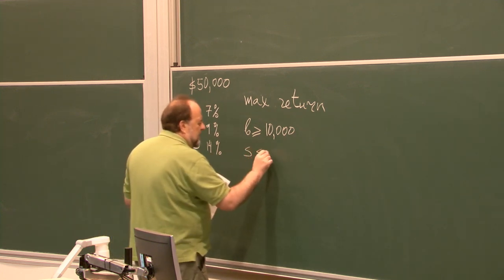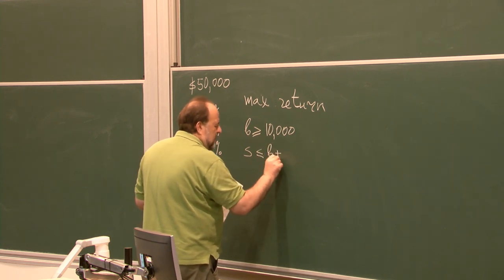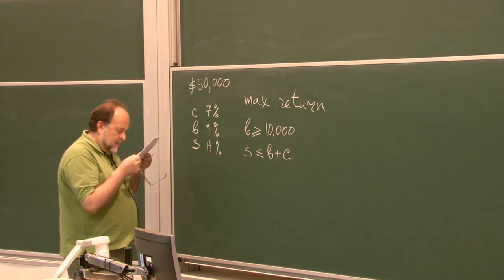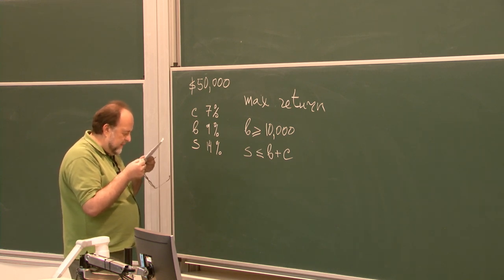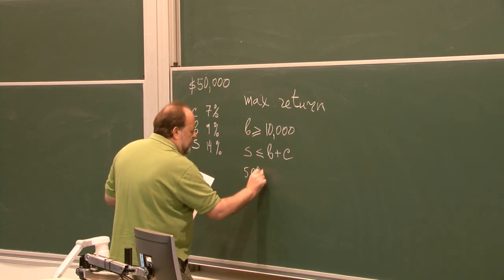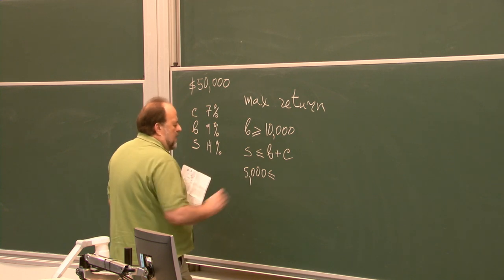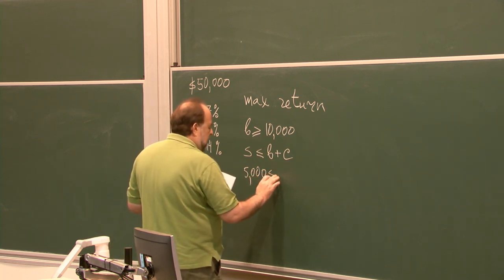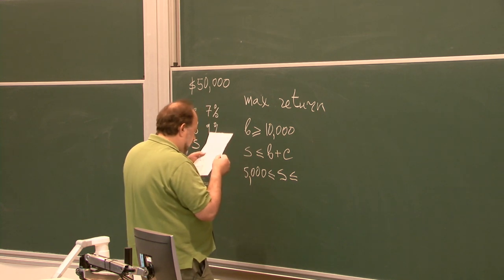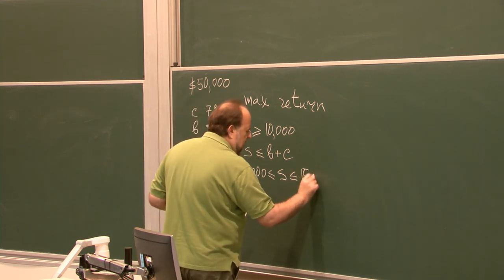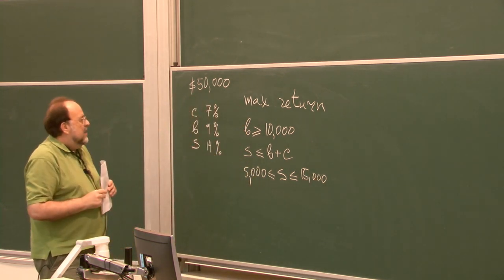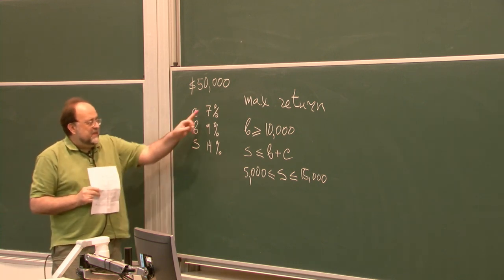Finally, she should invest between $5,000 and $15,000 in saving certificates, so C is greater than or equal to $5,000 and less than or equal to $15,000. You are given the yields of all investment options and you want to maximize return.